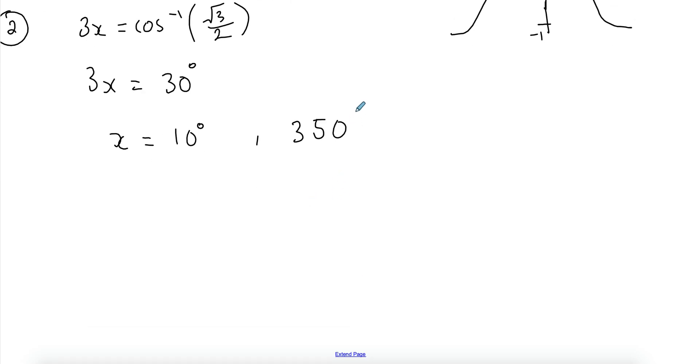My fourth quadrant solution is 360 minus this 10 degrees, which will give me 350. I got to my solutions.